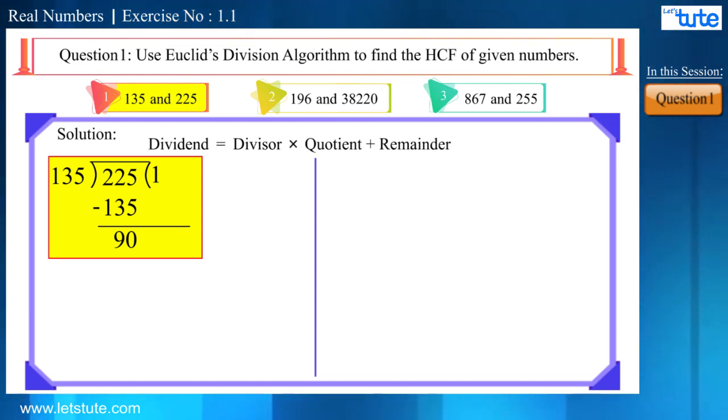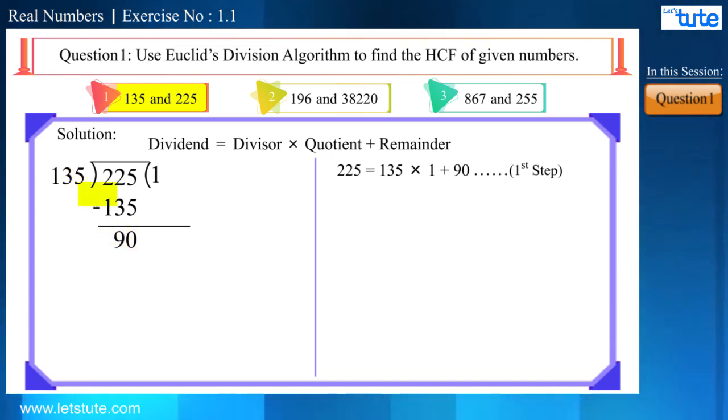Now, here our first step is completed. It means that we can write 225 equal to 135 into 1 plus 90. Now, we will consider the remaining remainder that is 90 as a divisor and 135 as a dividend. Let's move on to the second step. Here, we have 1 and here we have 90. Now, we got the remainder as 45. That means, we can write 135 in this way. And now, the second step is also completed.